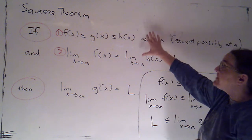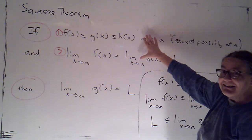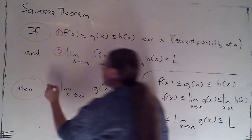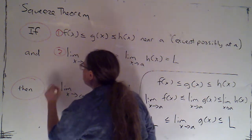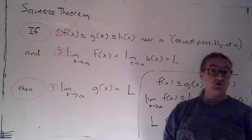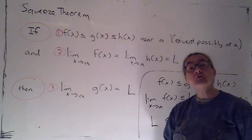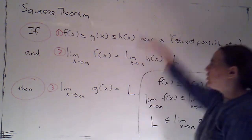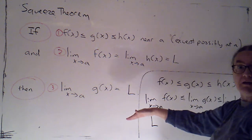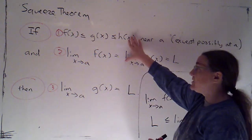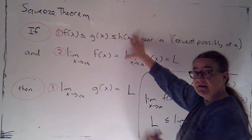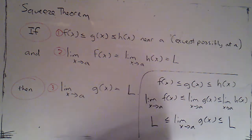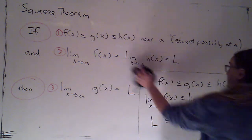Once I've done that, then I can say by the squeeze theorem that my conclusion is true. So if you are using the squeeze theorem to evaluate a limit, your write-up needs to include those three things: demonstrating that the two hypotheses are true, and then stating your conclusion.